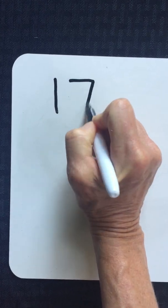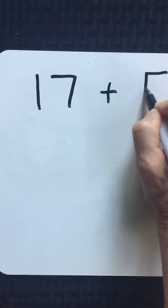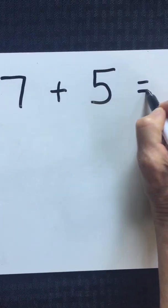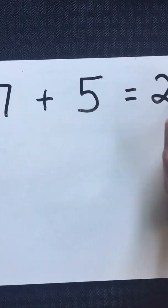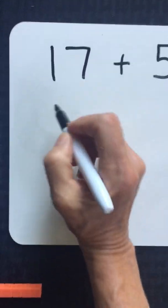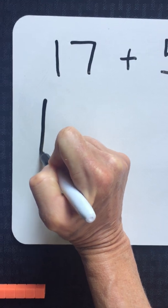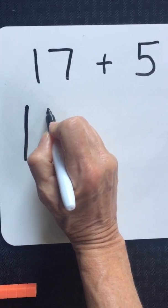I can also represent this problem without base 10 blocks. I might have to use drawings. 17 add five equals 22. I can solve that by making a 10 bar and seven ones.